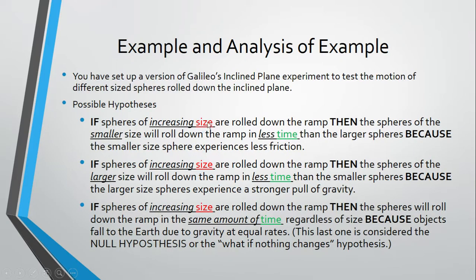So here I've identified size of the spheres as my independent variable. I've told you that in each part of the experiment, I'm going to increase the size of the spheres, so I'm going to use larger and larger spheres. And that when I compare the results, I predict that the smaller spheres will take less time to reach the bottom of the ramp than the larger ones.